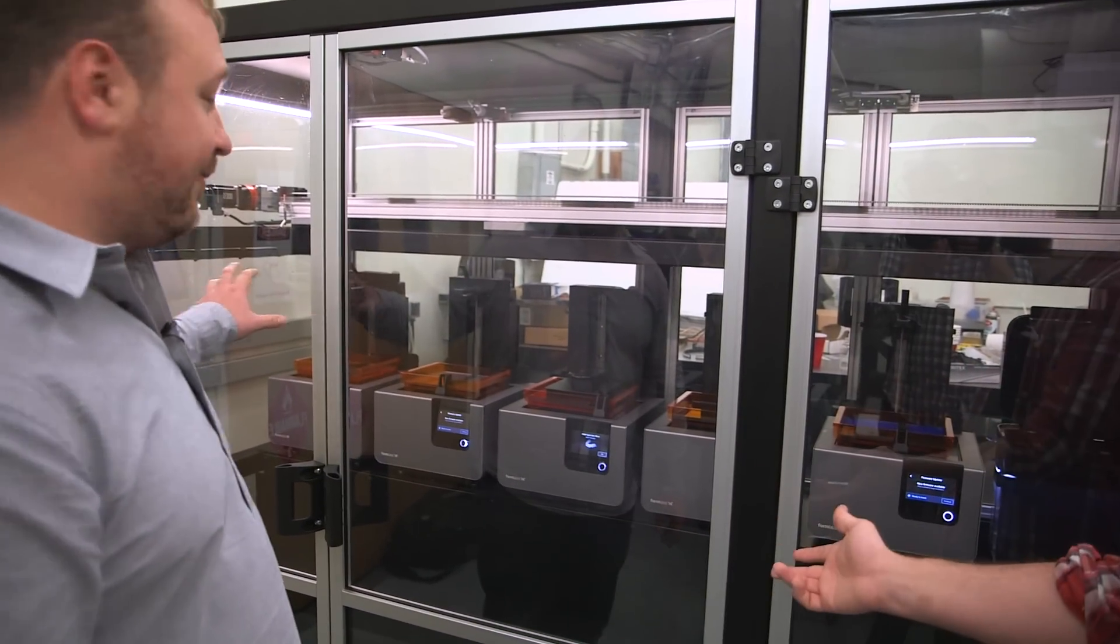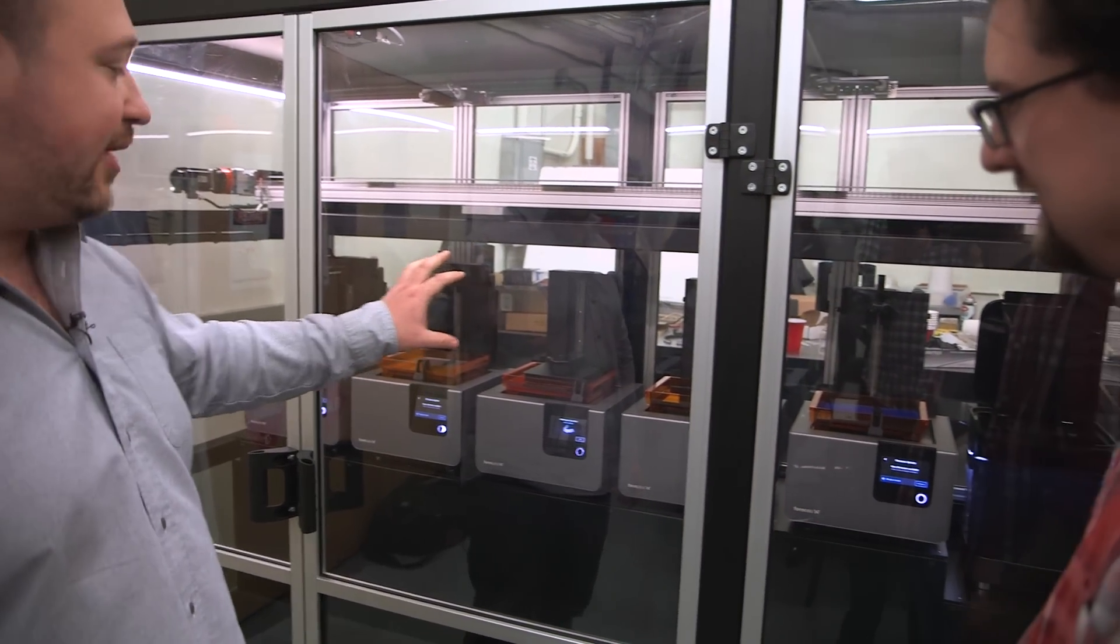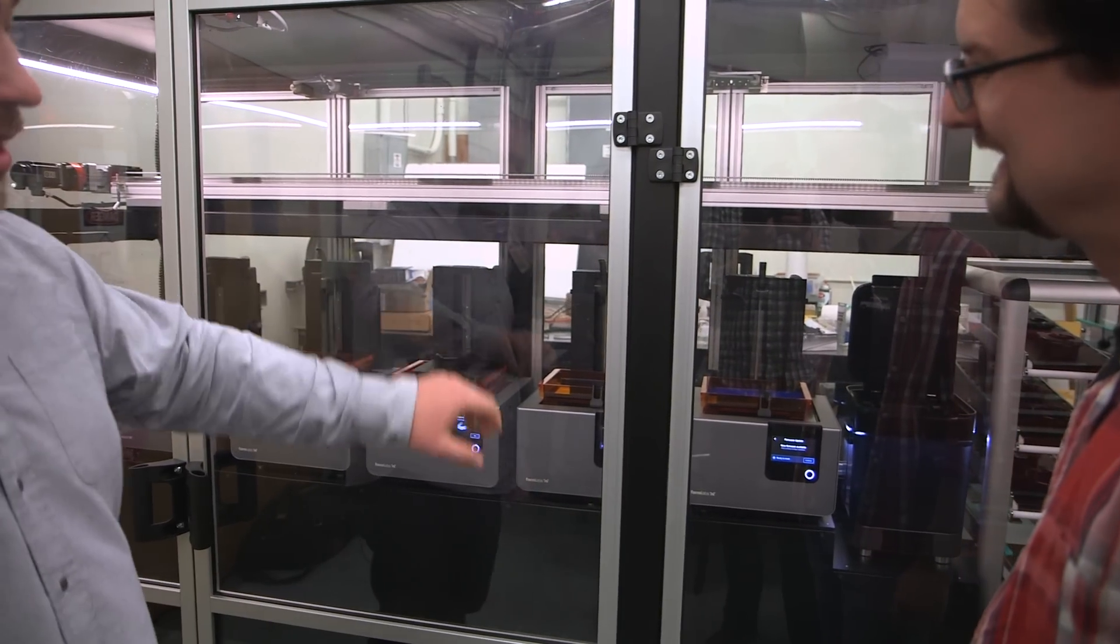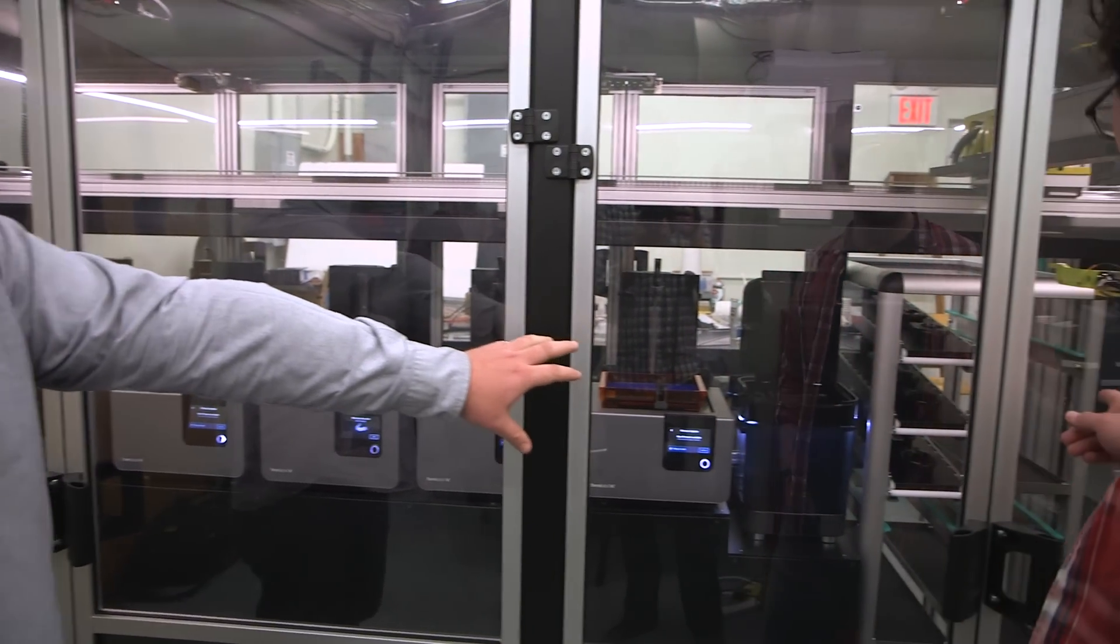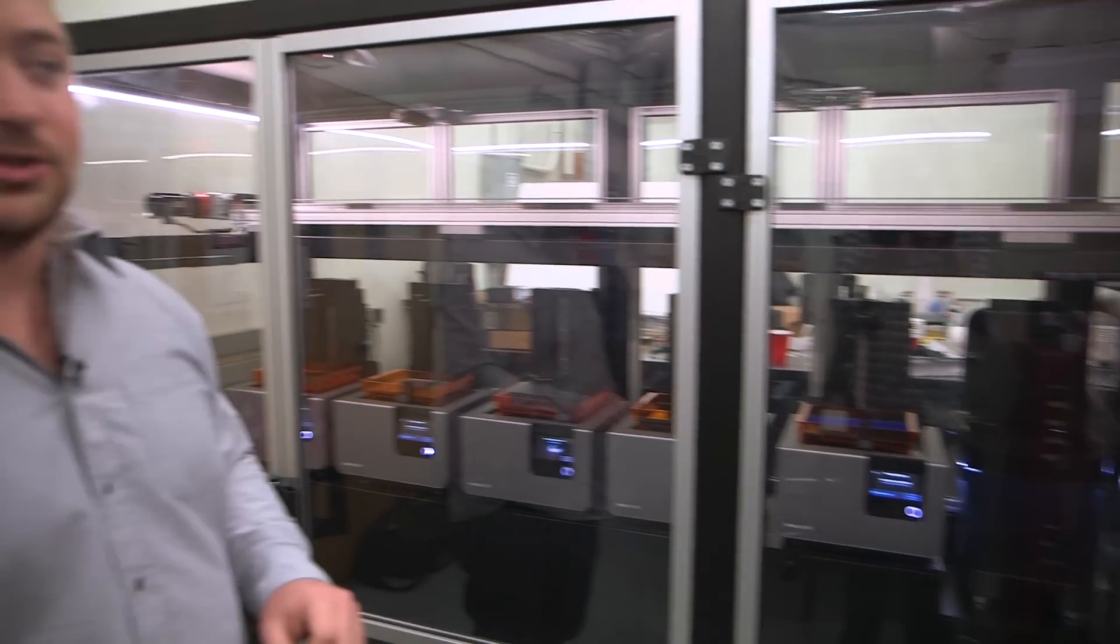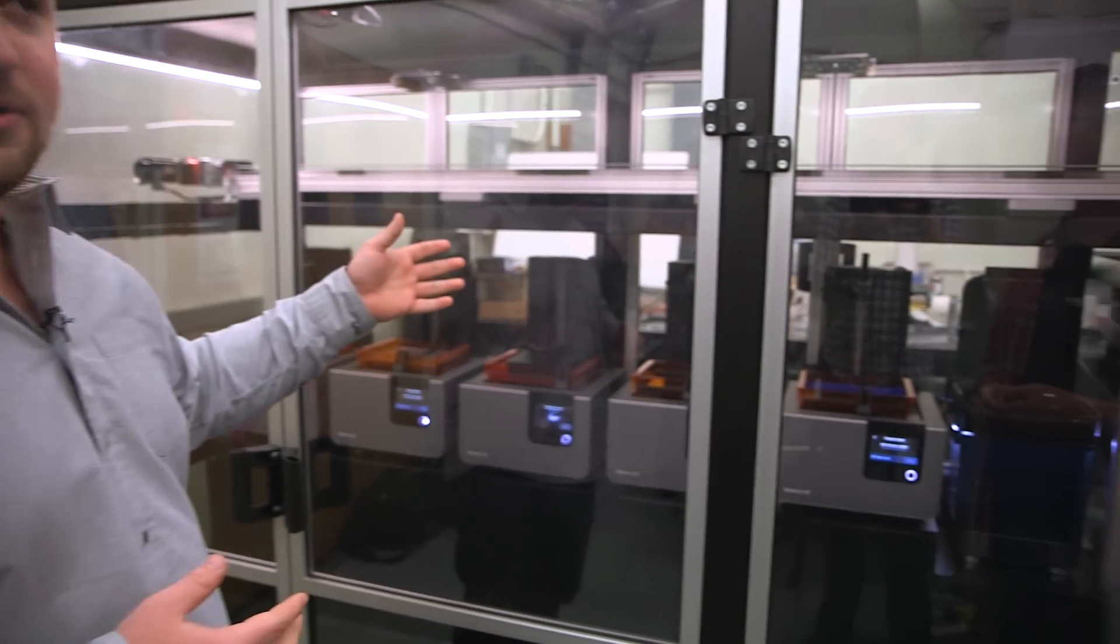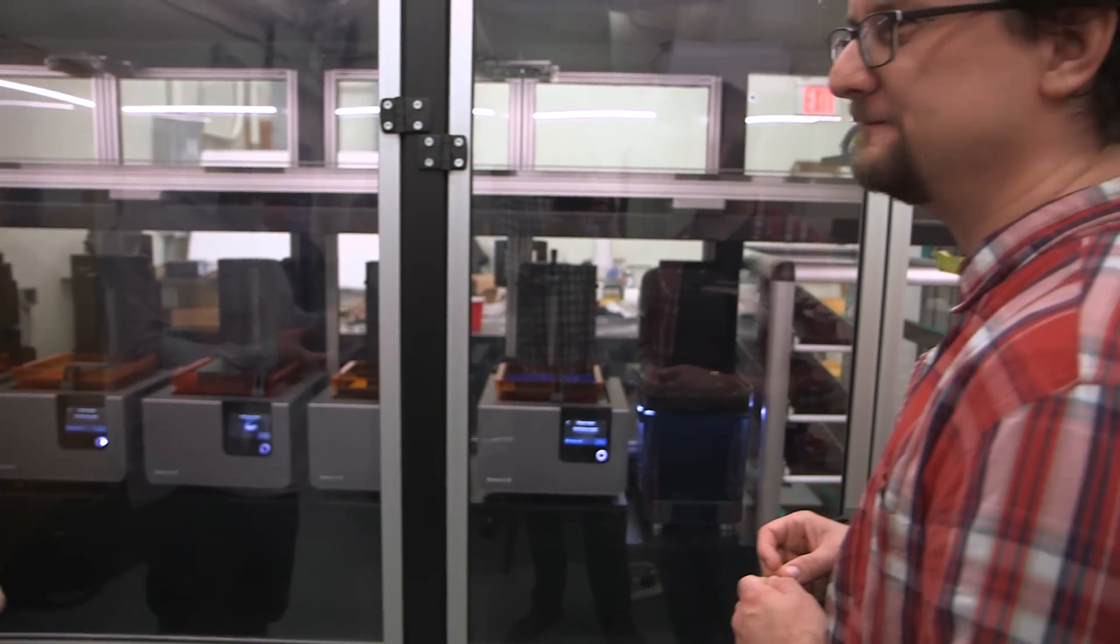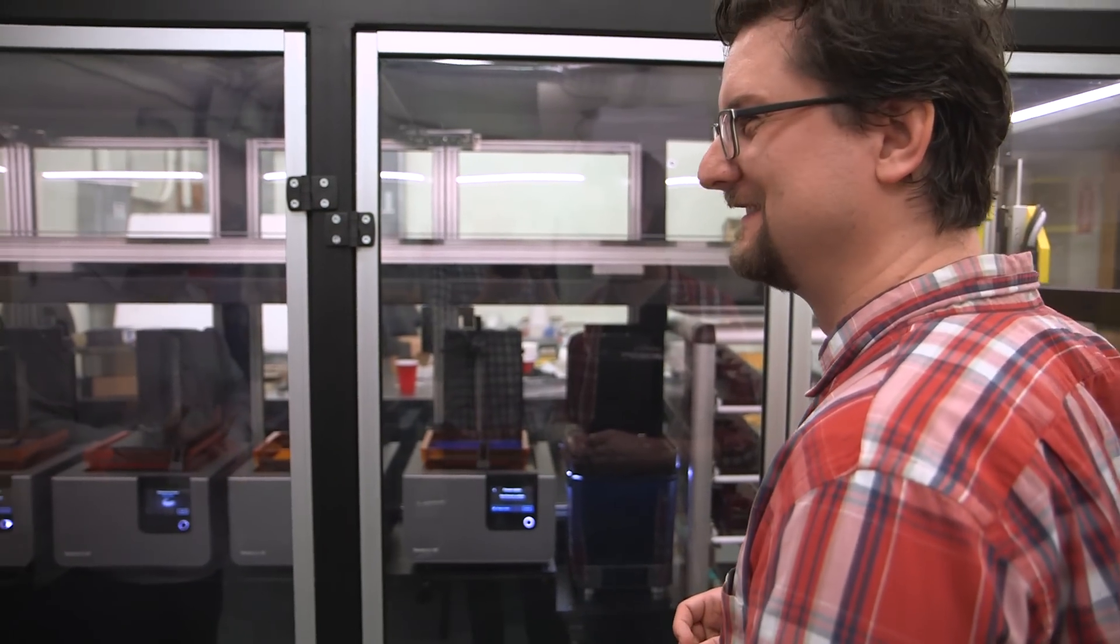What you see here is a five-cell, five-machine configuration. It's five Form 2s. As you have seen, three weeks ago we released a post-processing solution called FormWash. As you probably know, in 3D printing, the dirty secret is post-processing and getting from a part that is printed to a part that you can actually use, that you can put into an assembly, that you can give to your customers.